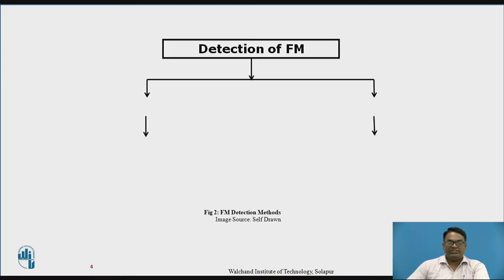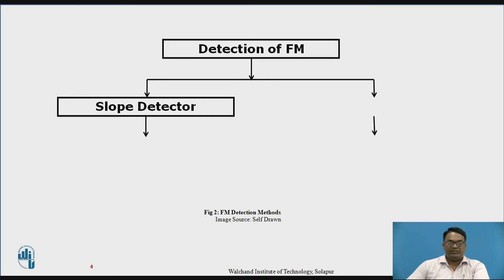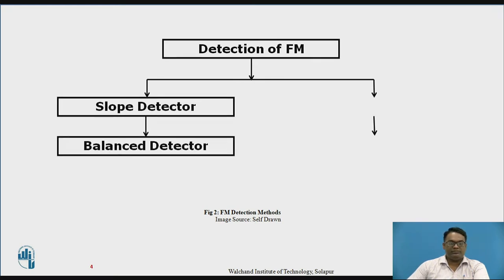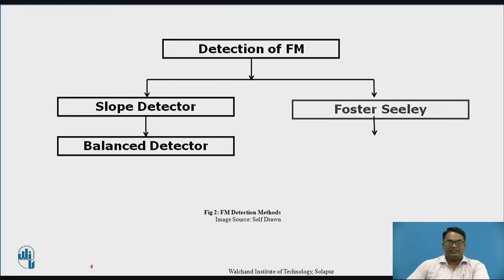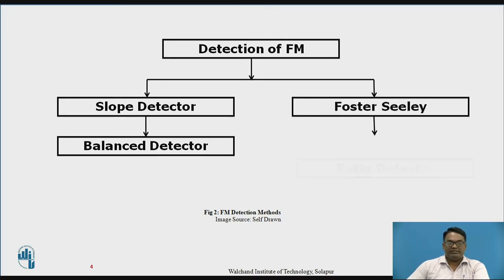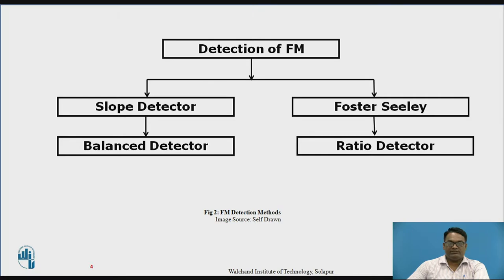Detection of FM generally takes place at the receiving side, and this process is divided into four basic types: the first is the slope detector, the second is the balanced slope detector, the third is Foster's Lee method, and the fourth is the ratio detector.